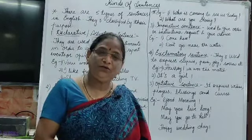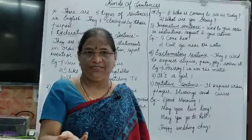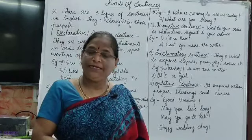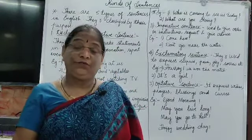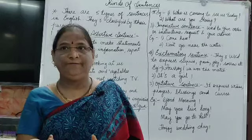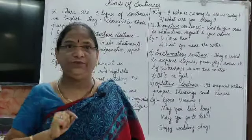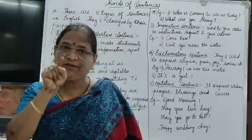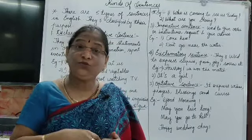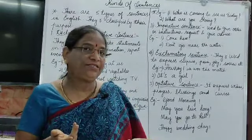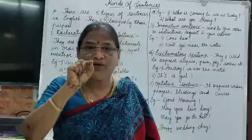So today we are here to clear our doubts about different kinds of sentences. There are five kinds of sentences. First, declarative or assertive — these are statements used to share different ideas and opinions, and they end with a full stop. Next is interrogative — interrogative means asking a question, and it ends with a question mark. Then comes imperative sentence, which is used to express order, request, or advice, and it also takes a full stop at the end.